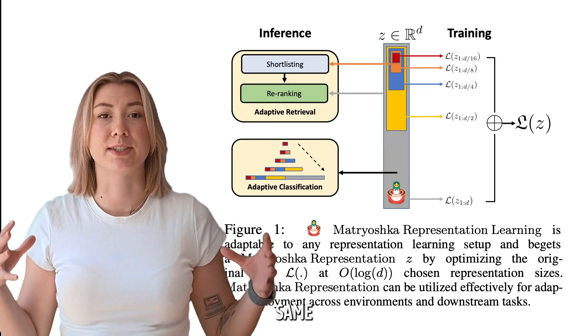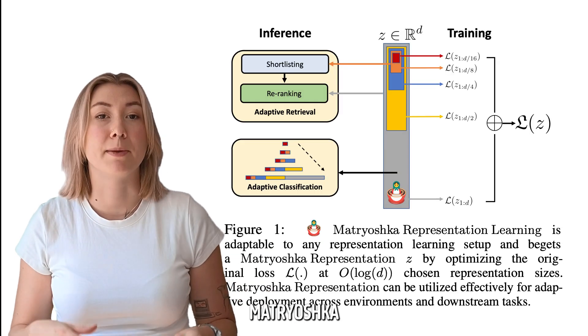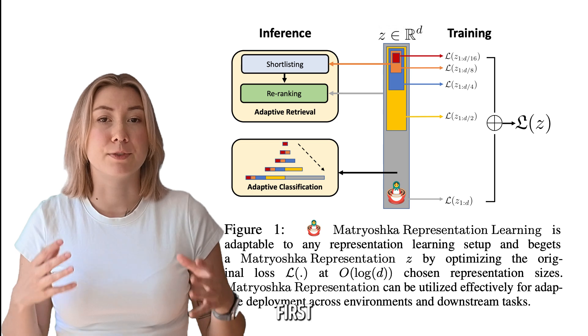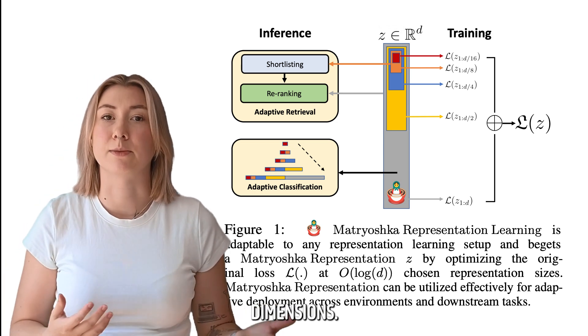In regular embeddings, all dimensions have the same capacity to store information, but in matrioshka representation learning, the first dimensions end up storing much more information than the later dimensions.